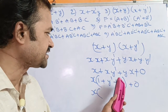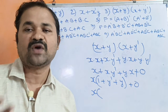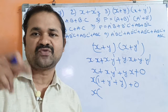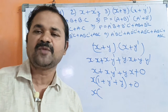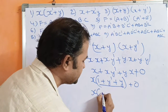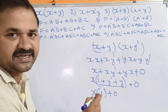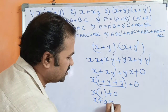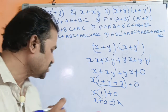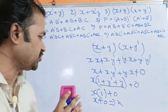We have X·(1 + Ȳ + Y). Since 1 plus anything equals 1, this simplifies to X·1, which equals X. Then X + 0 — since 0 plus anything equals that value — the solution for the third problem is X.